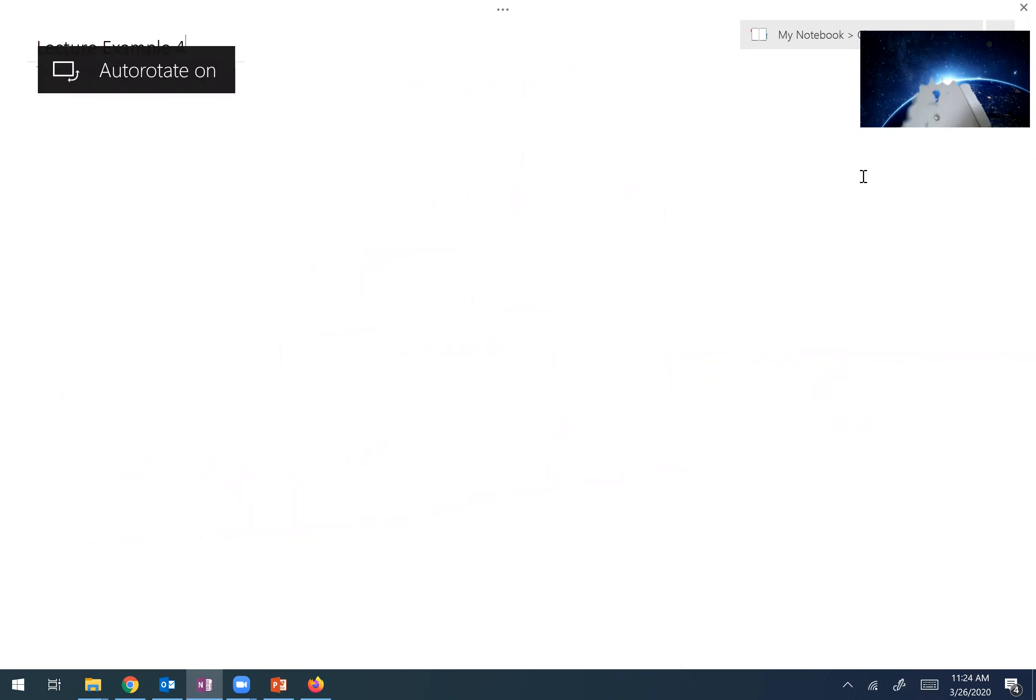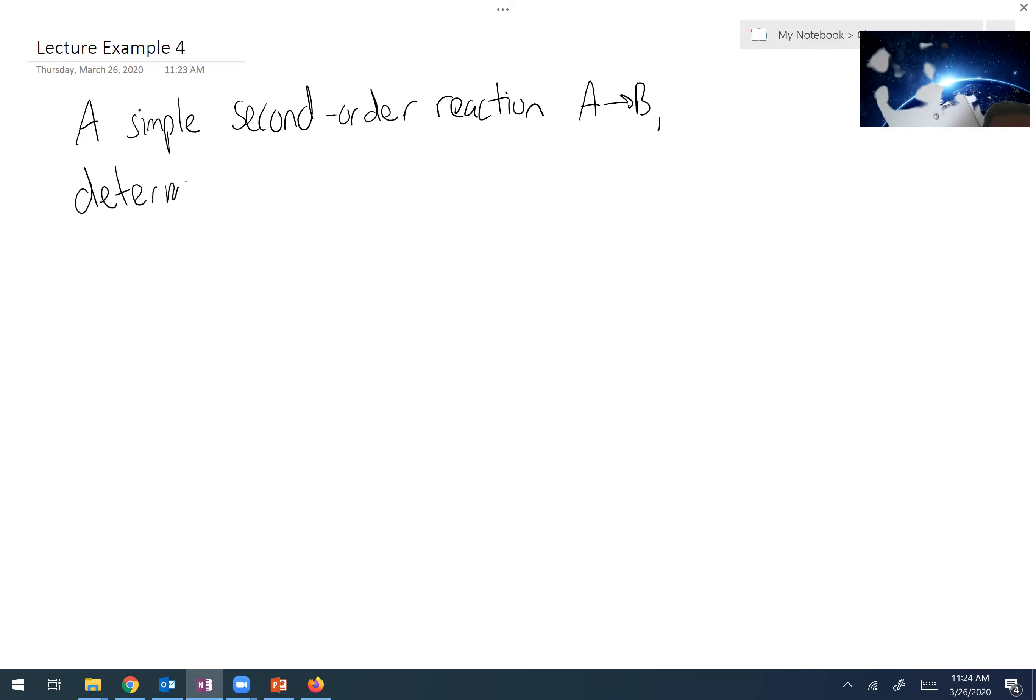Alright guys, so this example asks for a simple second-order reaction, A going to B, to determine the volume of a reactor necessary to convert 95% of A to B, meaning conversion X equals 0.95, and looking at a CSTR and a plug flow reactor.